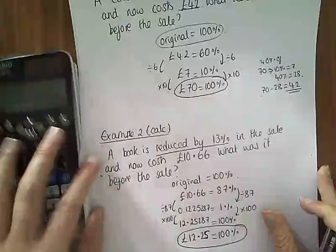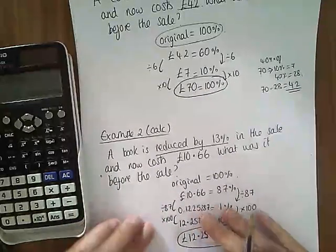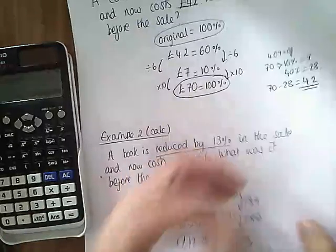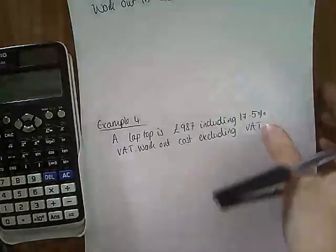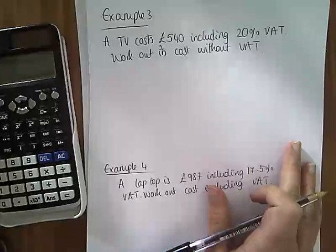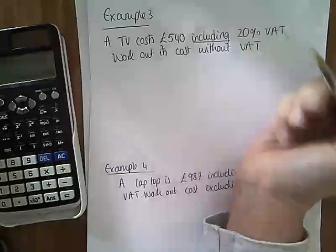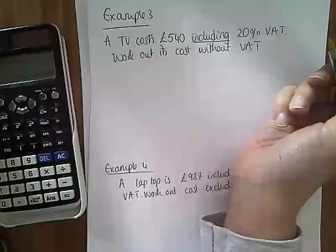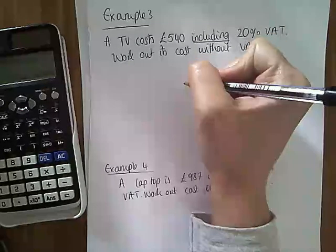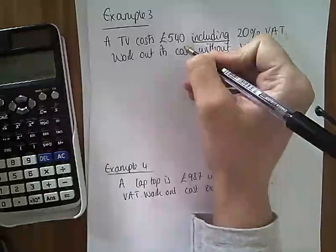Okay. Let's look at a couple of other examples where it's been increased by percentage rather than reduced by percentage. So, example number one. A TV costs £540, including 20% VAT. Work out its cost without VAT. So, we had a cost. We found 20%. We added it on. And the answer we got was £540.